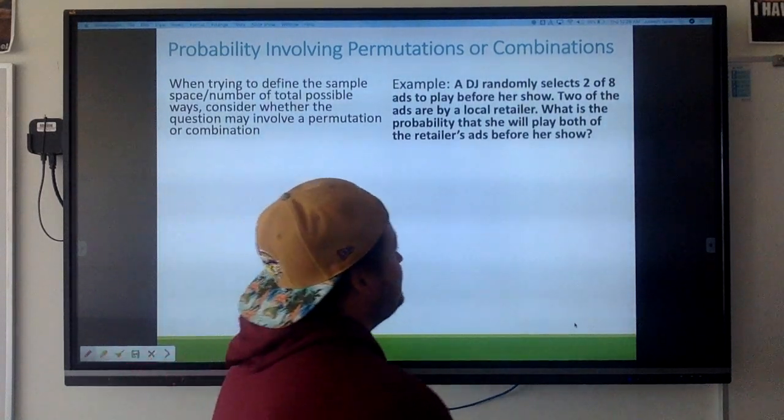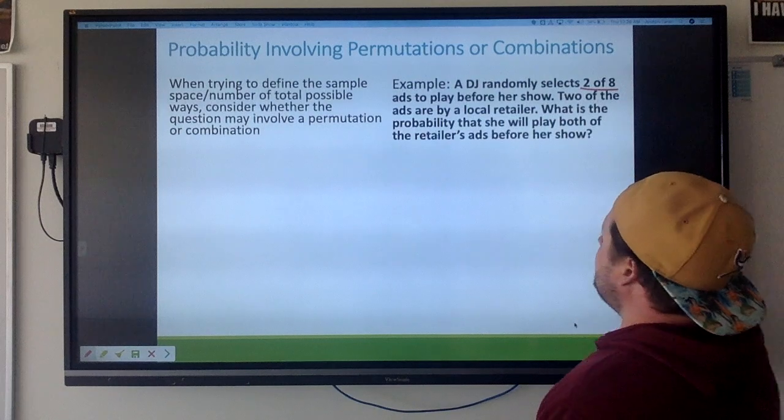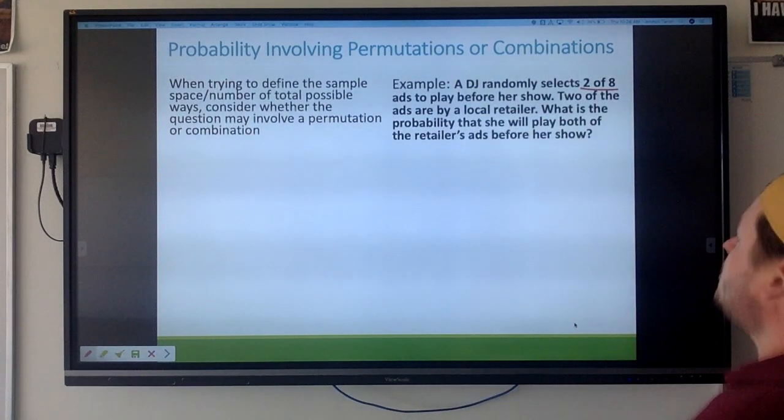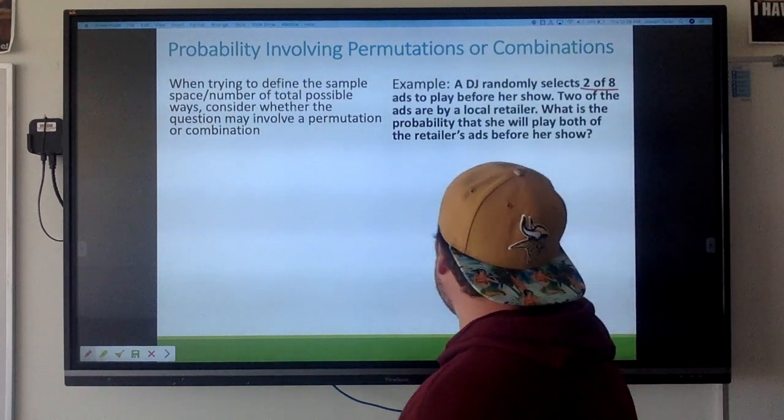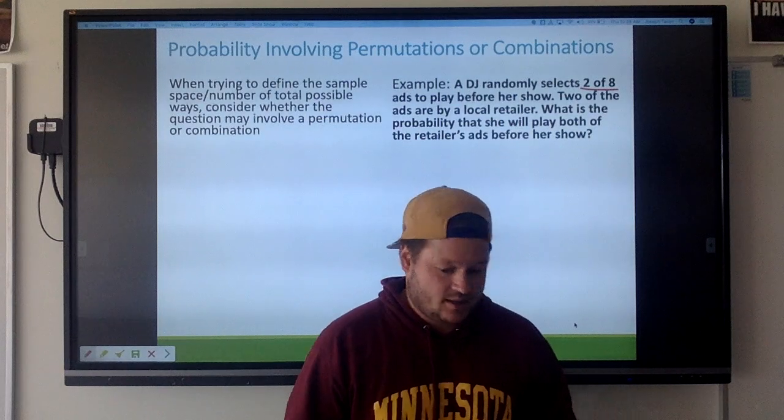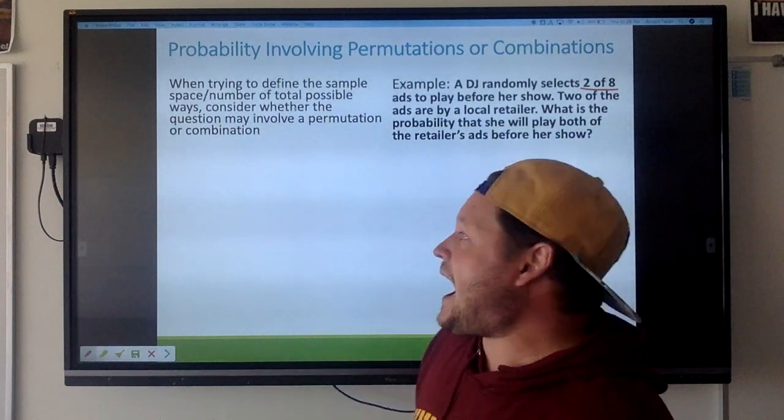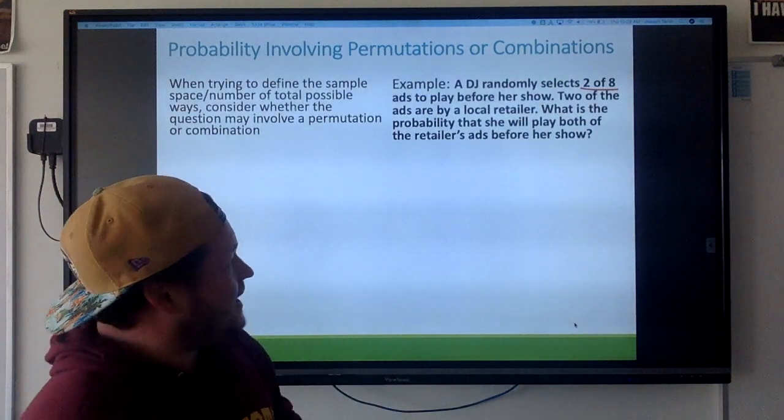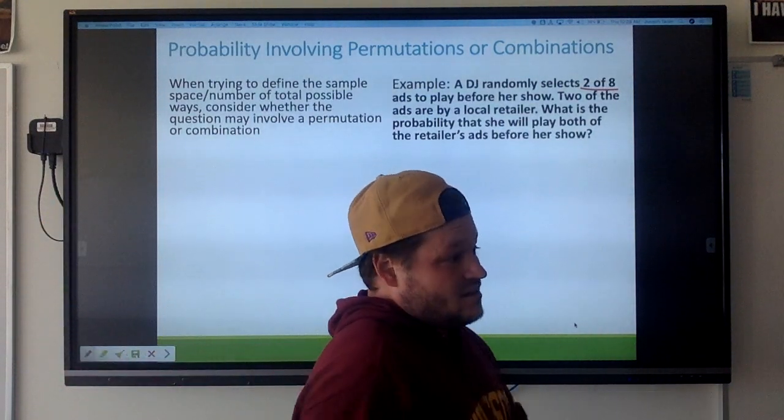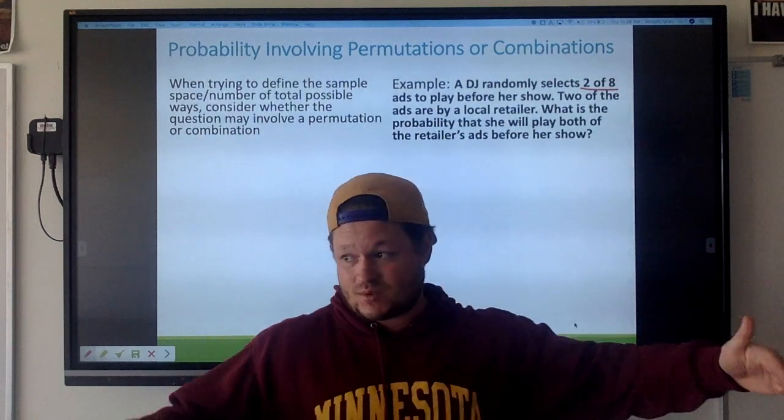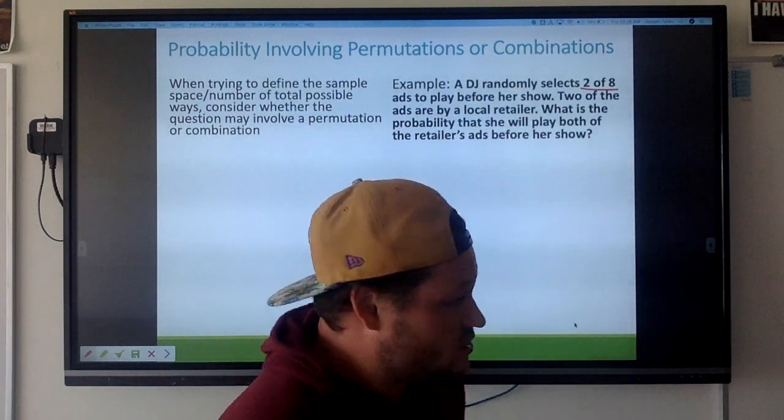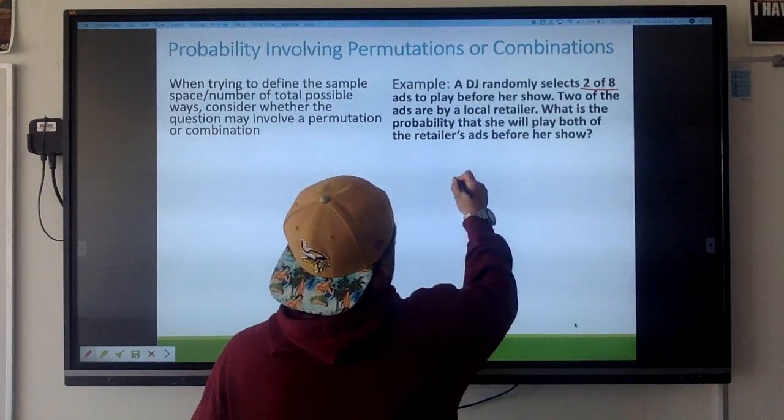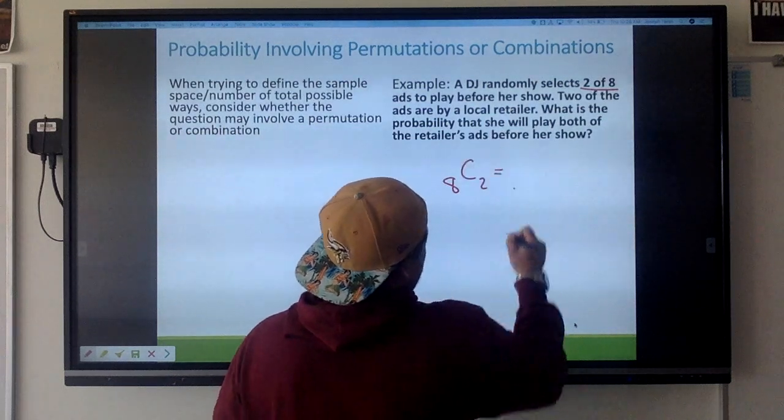A DJ randomly selects two of eight ads to play before her show. Two of the ads are by a local retailer. What is the probability that she will play both the retailers ads before her show? This can get a little tricky. Let's just think, how many different ways can this DJ select two out of eight ads to play before her show? Does order matter? No, it's not like she's saying look I got to play this one first and this one second, she's just randomly selecting two. So since order doesn't matter I know it's a combination. There's eight songs to choose from, combination, two at a time.